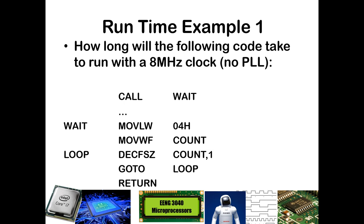Thinking about how many times the loop decrements: it goes from 4 to 3, 3 to 2, and 2 to 1 without skipping — that's three times at one cycle. Then the last time it goes from 1 to 0 and skips — that's one time at two cycles. The go-to executes every time it does not skip, so that's three times at two cycles each. Finally, the return executes exactly once as a two cycle command. Adding it all up: 2+1+1+5+6+2 = 17 cycles. Not using the PLL with our 8 MHz clock, each cycle takes 500 nanoseconds, so this entire execution takes 8.5 microseconds.